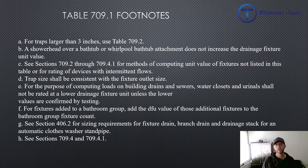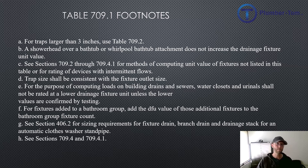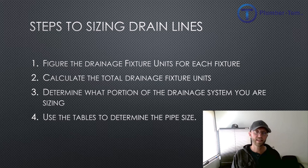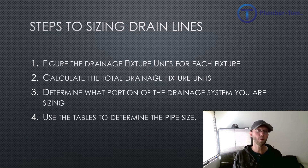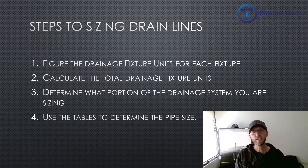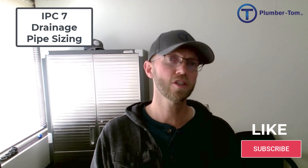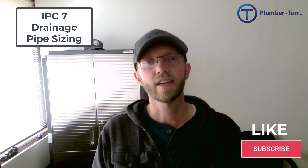Don't forget to look at the footnotes below the tables when sizing. Table 709.1 has quite a few of them covering important edge cases — for example, if there's a showerhead over a bathtub, that does not add extra drainage fixture units. To recap, the four basic steps for sizing drains are: first, figure out the drainage fixture units for each fixture; second, calculate the total; third, determine what portion of the drainage system you are sizing — horizontal branch, stack, or building drain; and finally, use the tables to find your pipe size. There you have it — drainage pipe sizing simply explained.